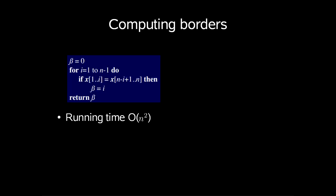To compute the length of longest border implies normal form, so the length for every index 1 up to n minus 1. If x1 up to i is the same as x up to n, then beta is equal to i. The running time of this is order n squared. Can we do better? Yes, we do it by computing even more.